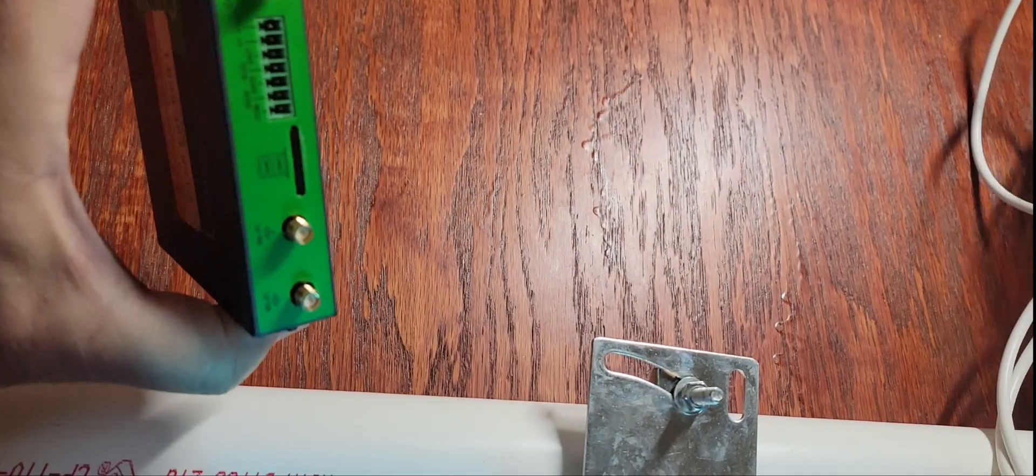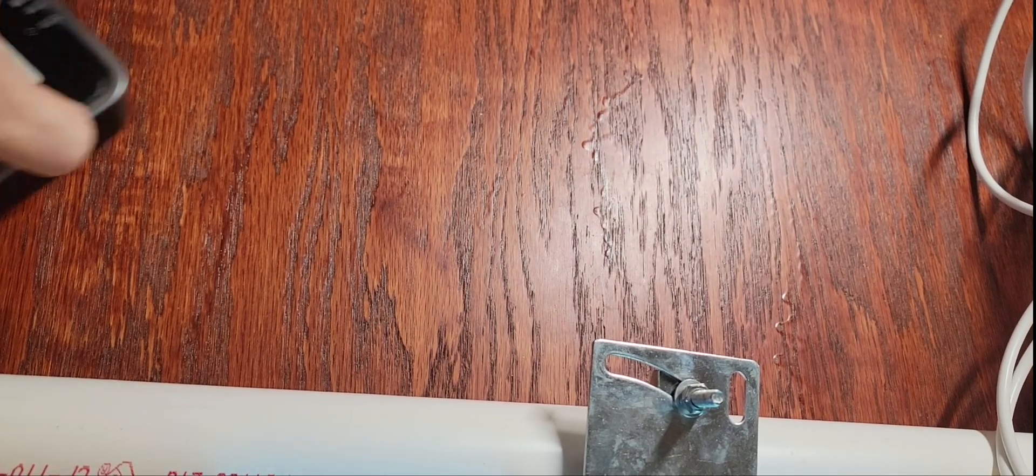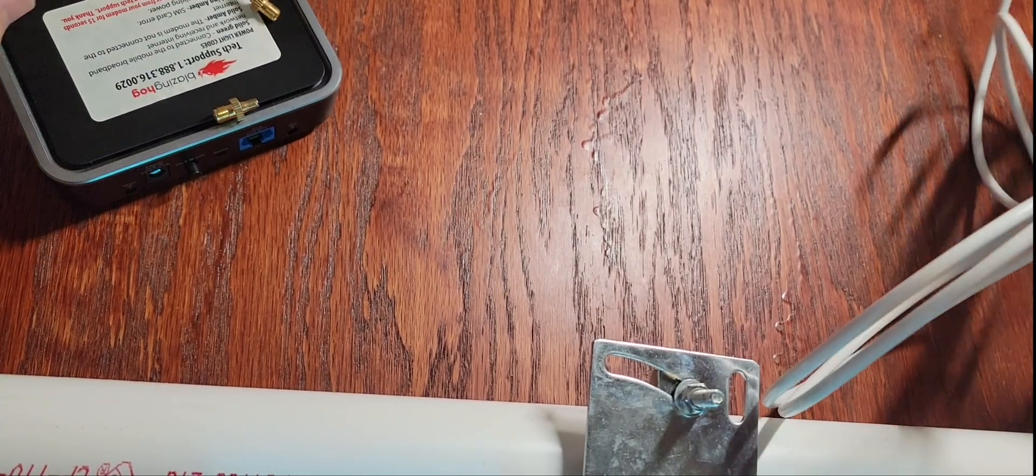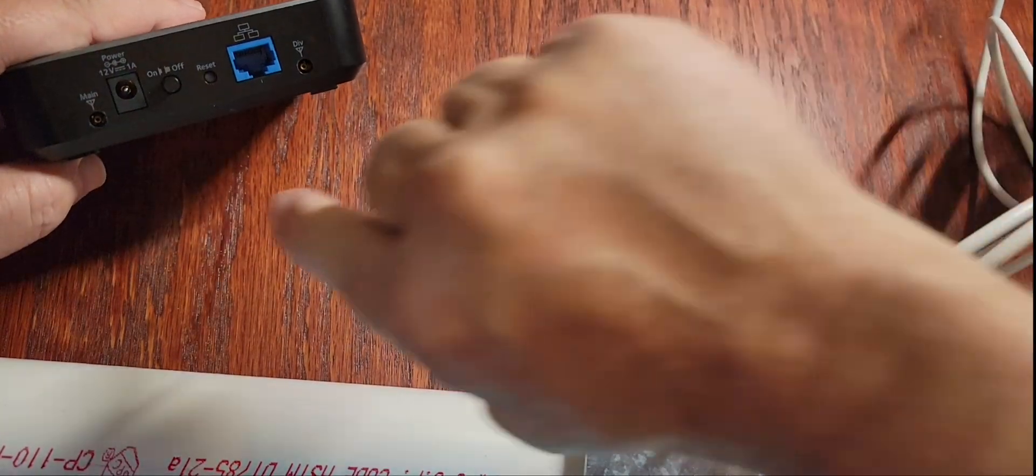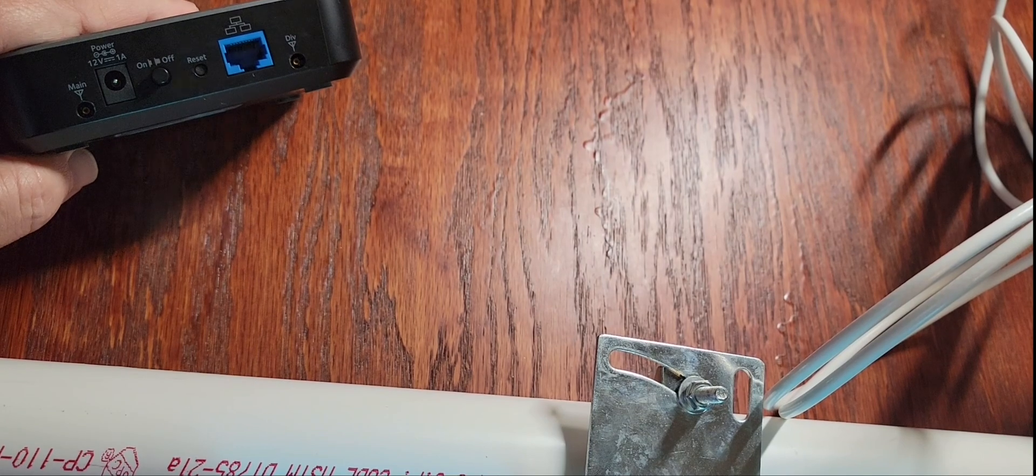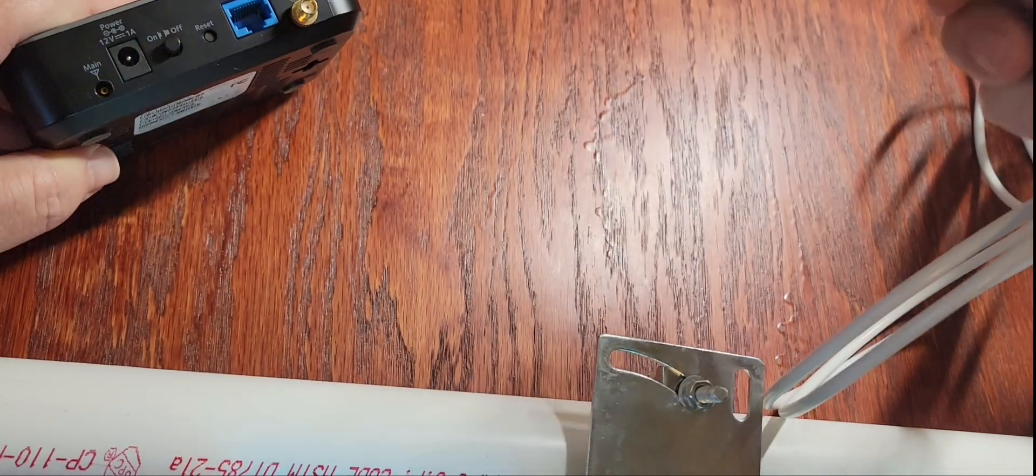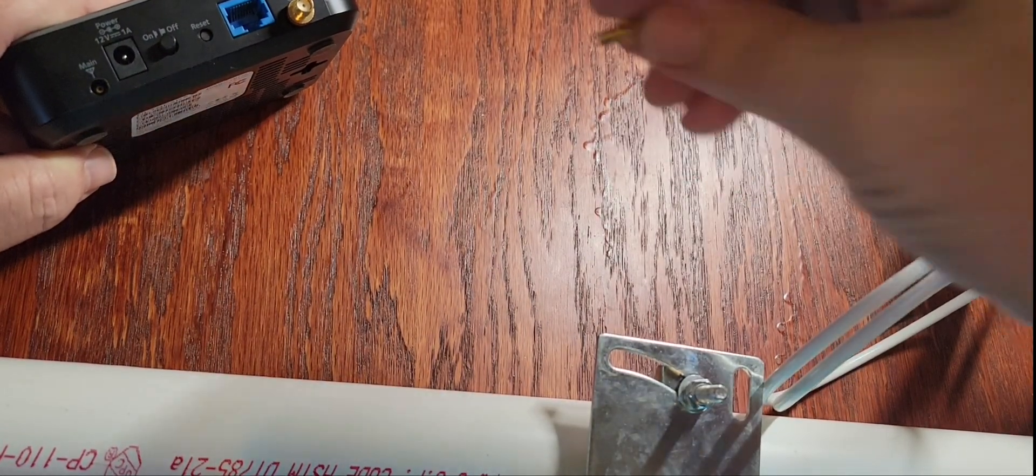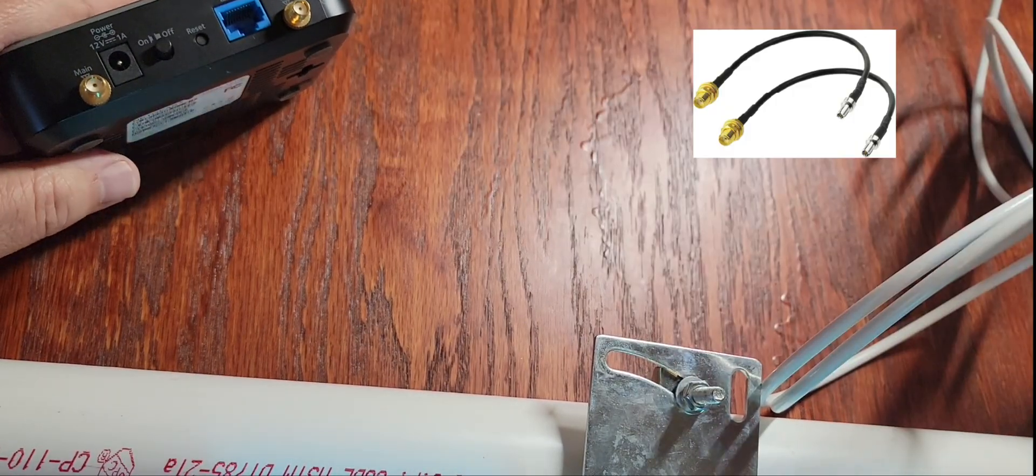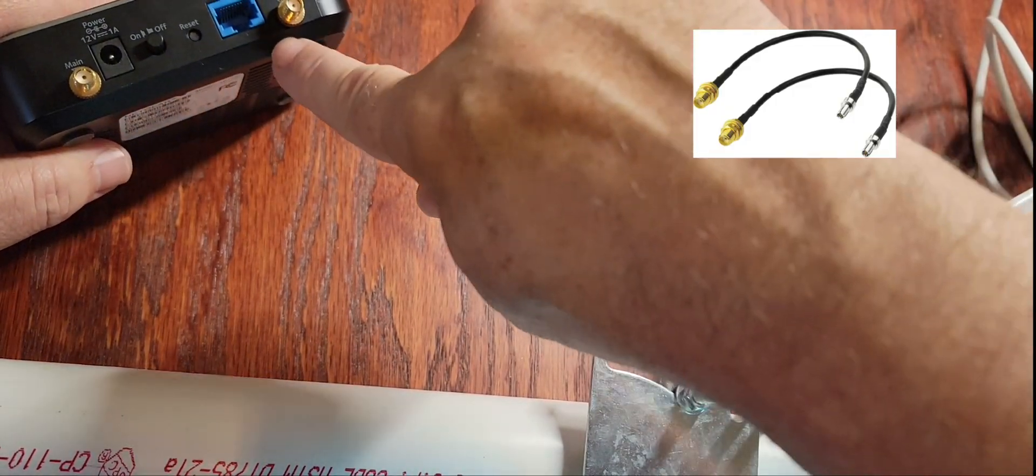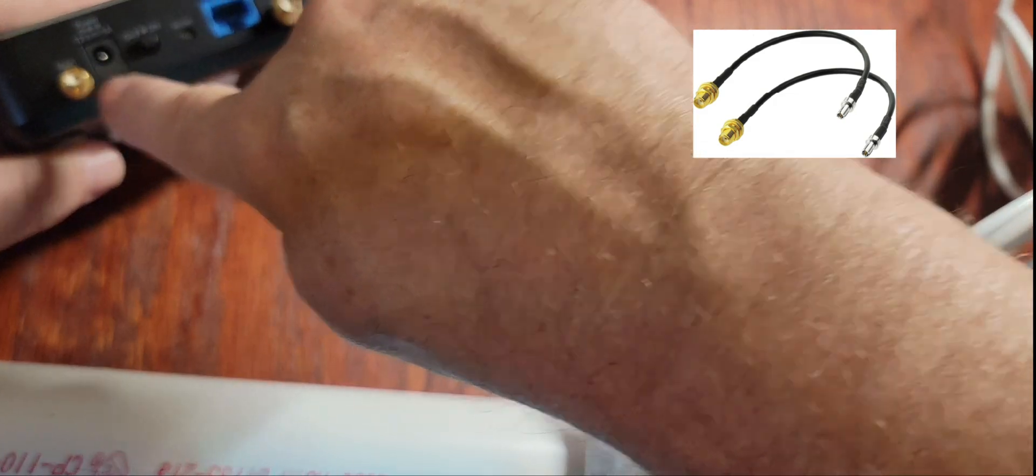Some modems have a little bit different type of connection. If you have a modem from us that looks like this, it has what are called TS9 connections and you'll see this Main and Div. You'll probably have a little bit different attachment. These aren't the best. The ones that work better have a little wire on them. That's the TS9 adapter that plugged in and connected to the antenna on the inside.